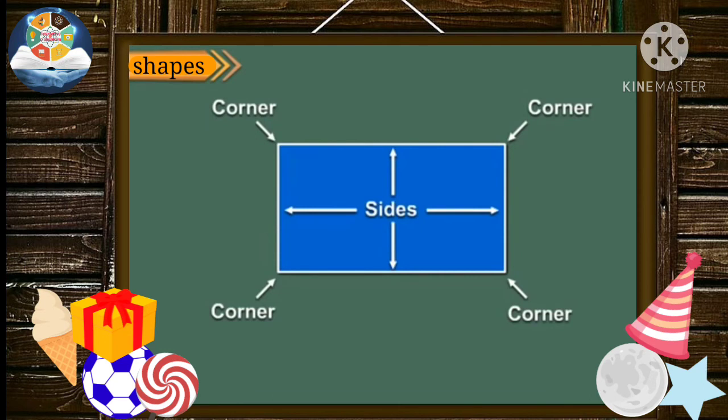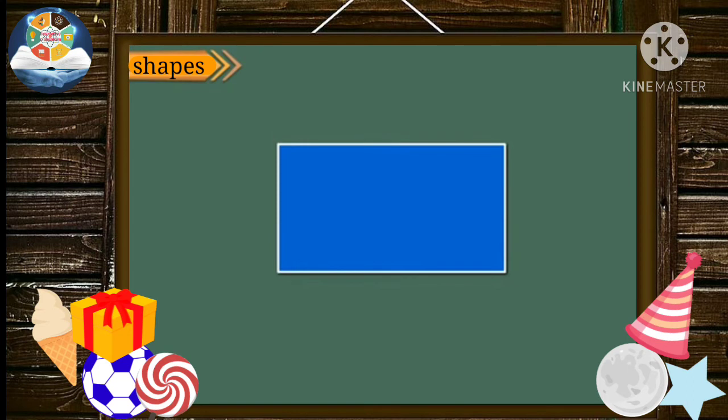Now, look at this shape. It is also made of four straight lines, so it also has four sides and four corners. But it is not square because all its sides are not equal. Its opposite sides are equal. It is a rectangle.